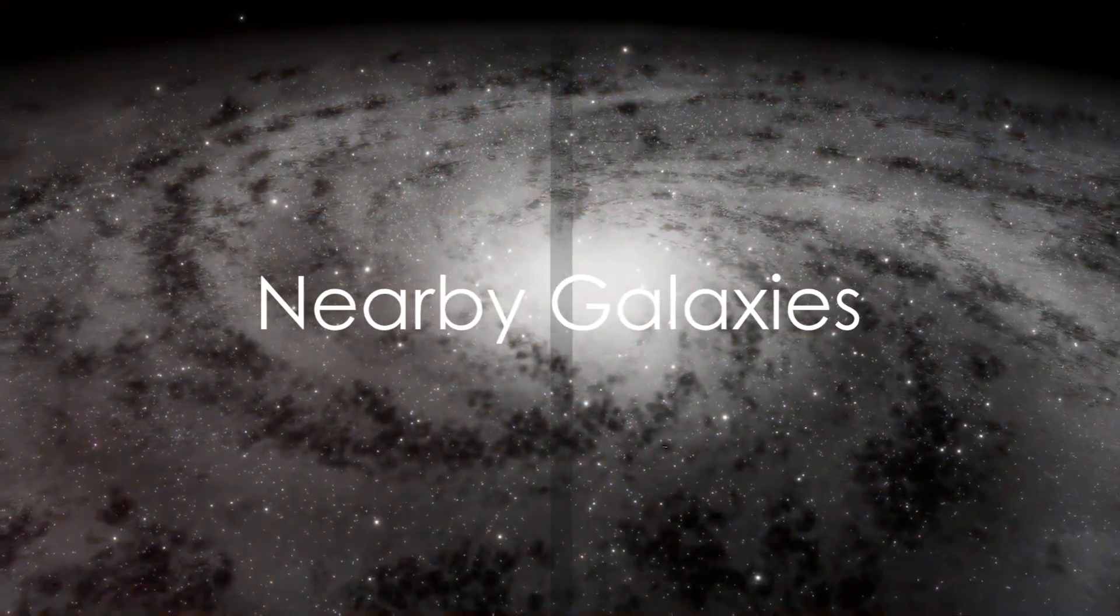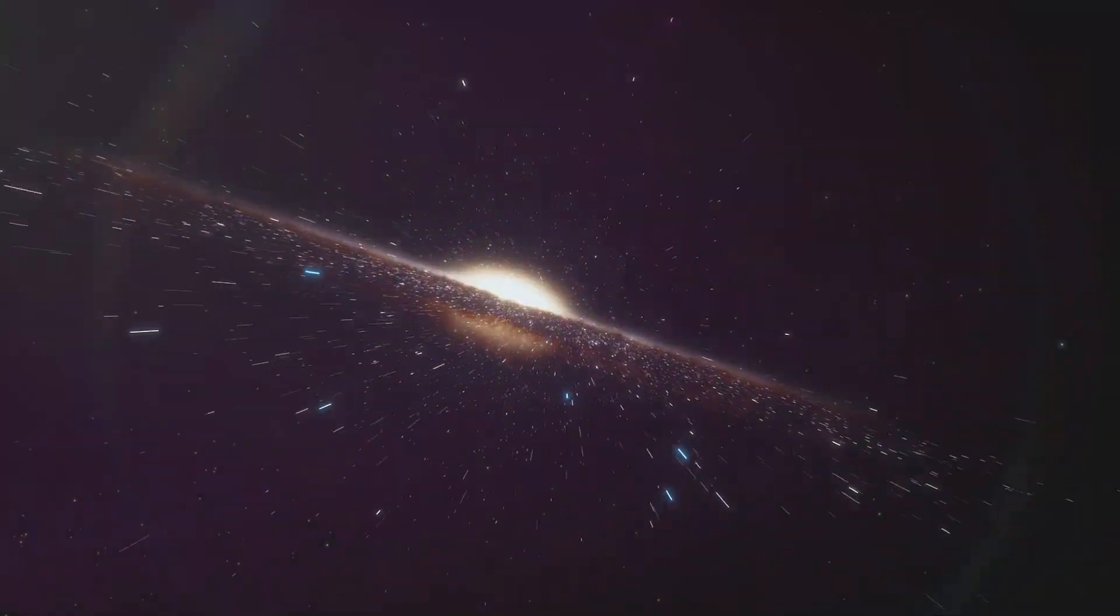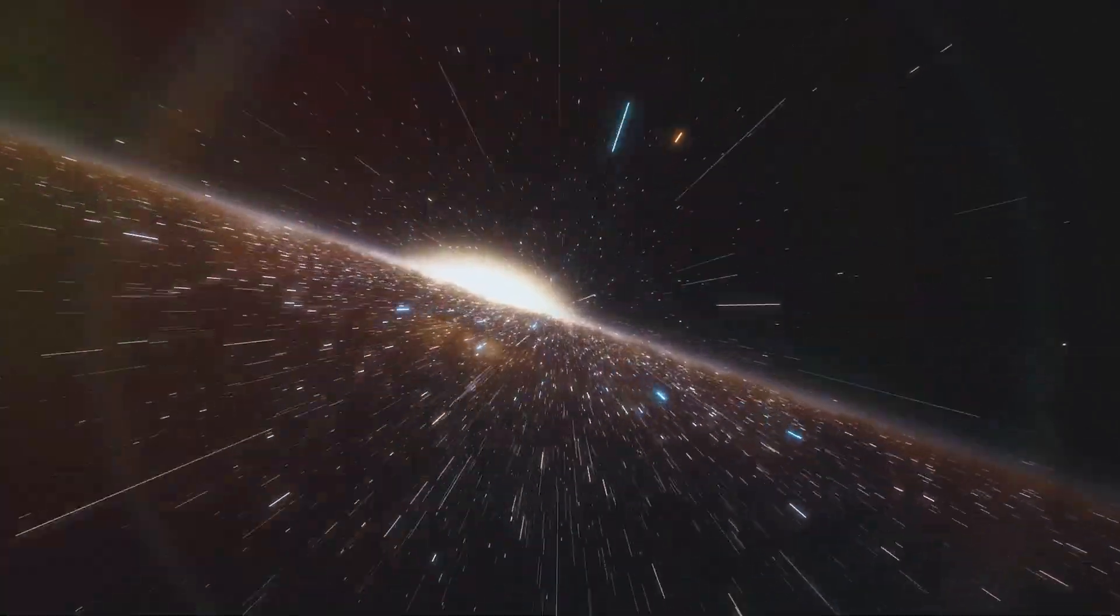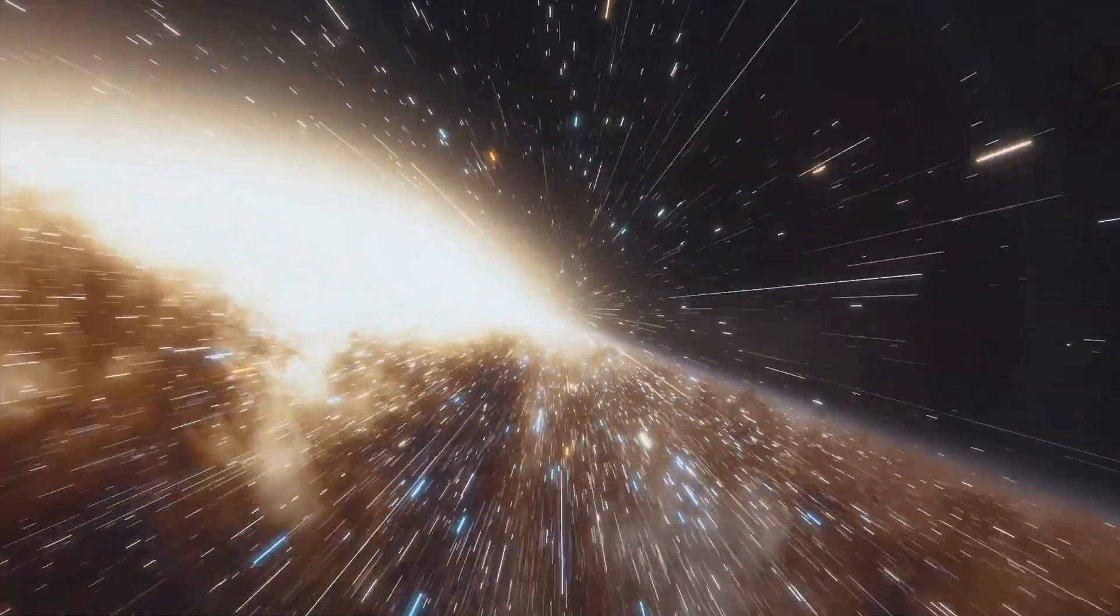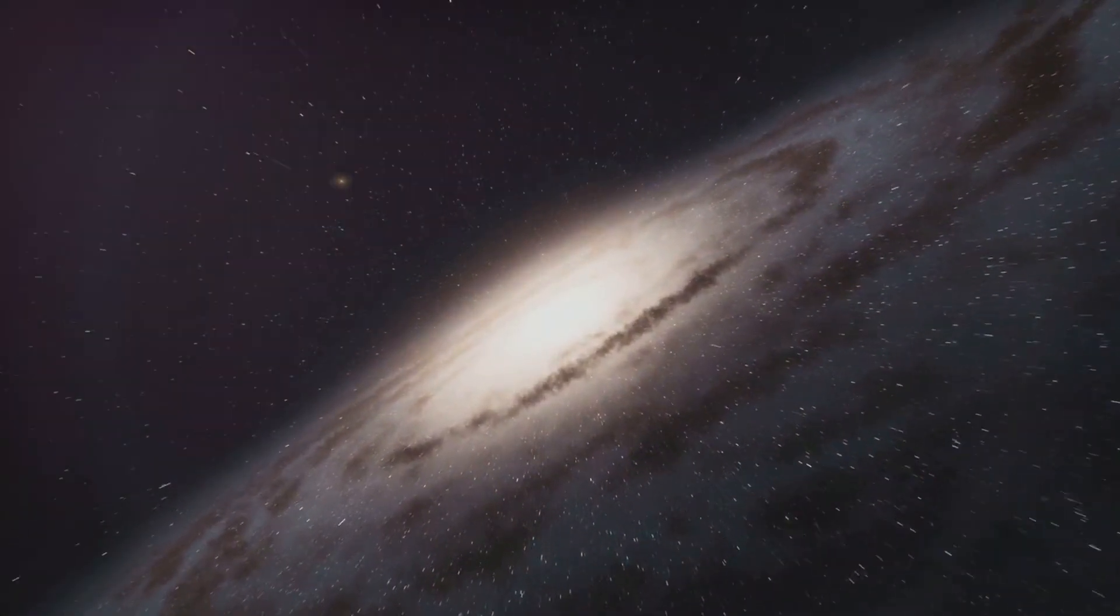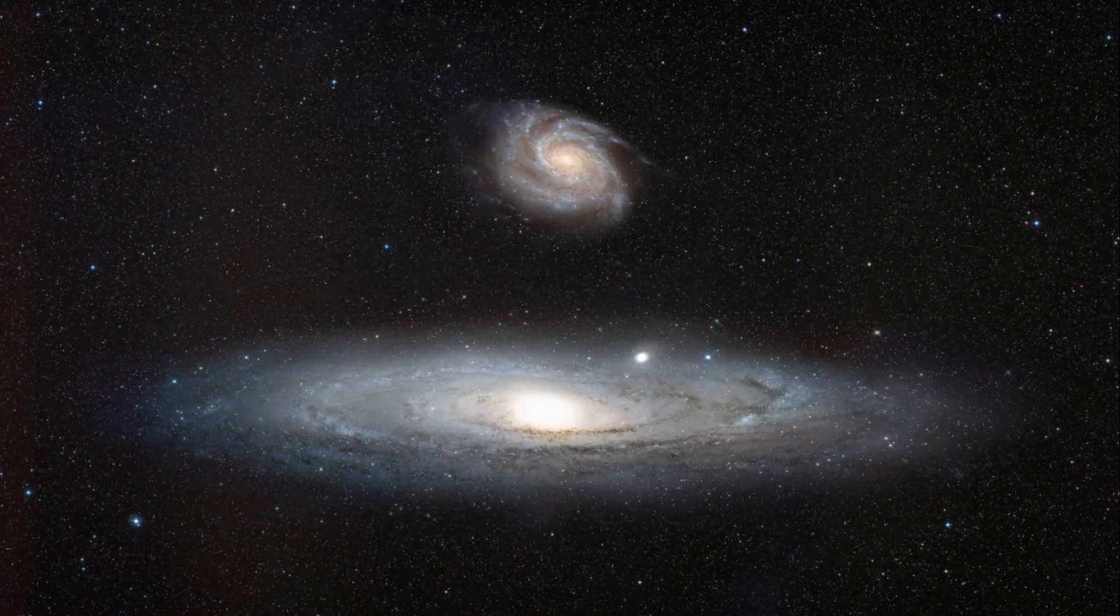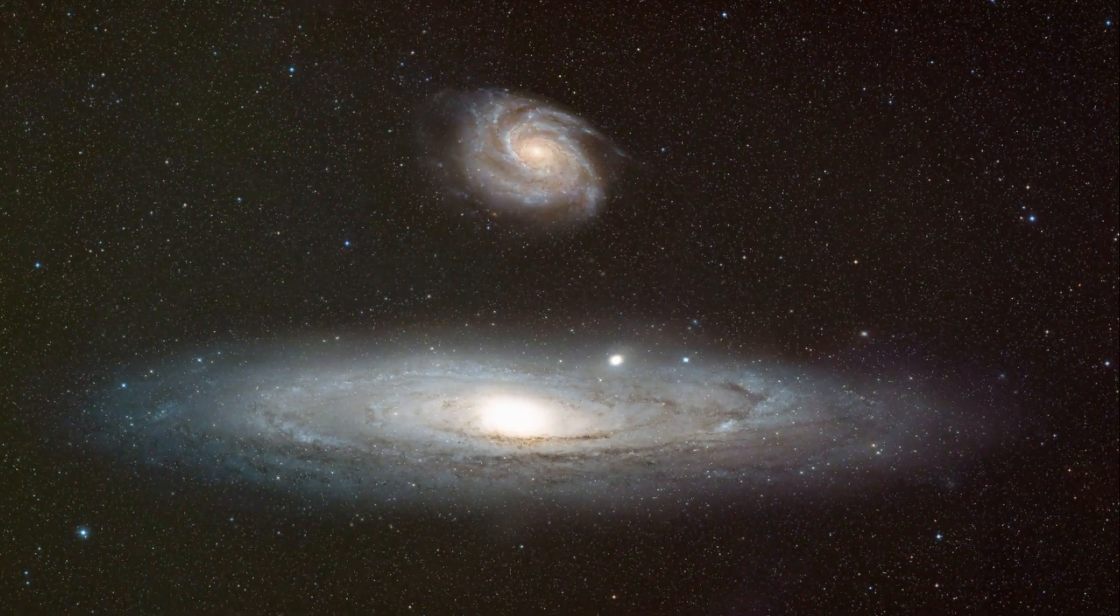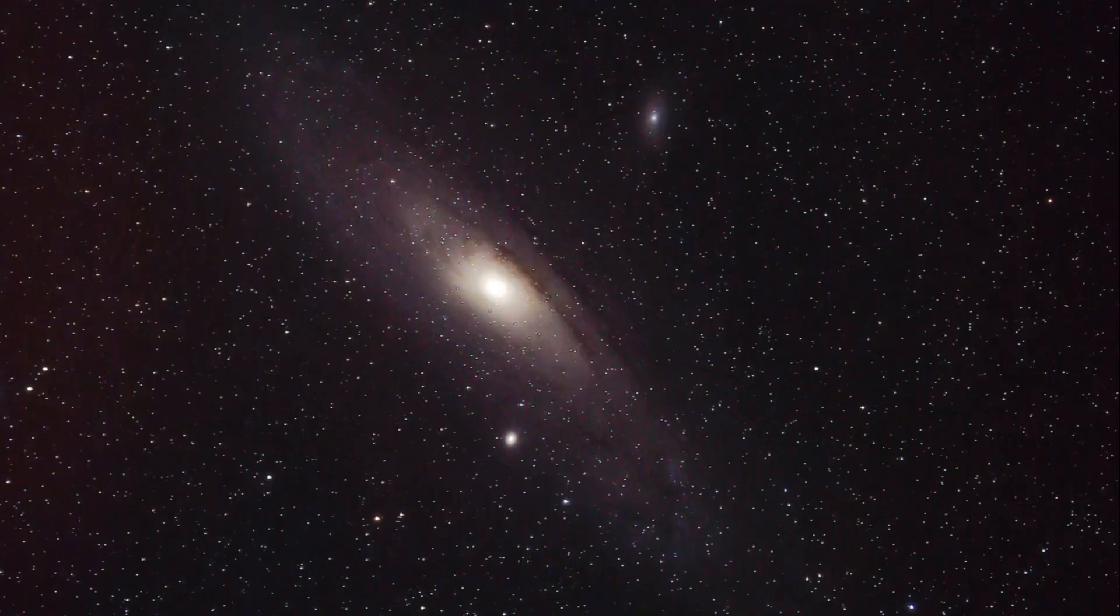As we leave the confines of the Milky Way, we enter the domain of nearby galaxies. The universe is a vast expanse, filled with countless galaxies. Just next door, in cosmic terms, is the Andromeda Galaxy. It's our closest spiral galaxy neighbor, situated a mere two and a half million light years away. It's also on a collision course with the Milky Way. But don't worry, this intergalactic meeting won't happen for another four billion years or so.